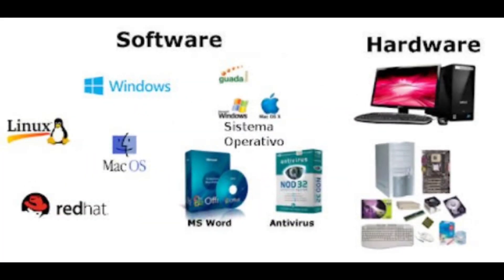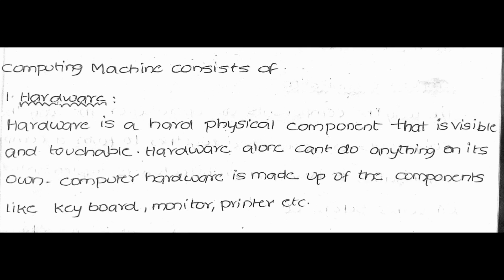A computer consists of hardware and software. Hardware refers to the physical components that are visible and touchable — such as CPU, monitor, keyboard, mouse, printer, etc. Hardware alone cannot do anything on its own without software.